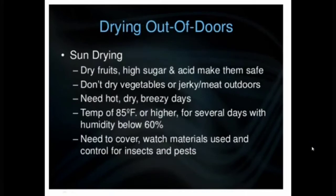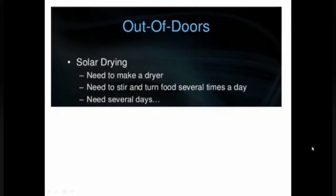For drying out of doors, sun drying of fruits — which are high in sugar and acid — makes them safe. Do not dry vegetables or jerky meats outdoors. Hot, dry, breezy days are needed with temperatures around 85 degrees Fahrenheit or higher for several days and humidity below 60%. For solar drying you need to make a dryer, stir and turn food several times a day, and allow several days for drying.